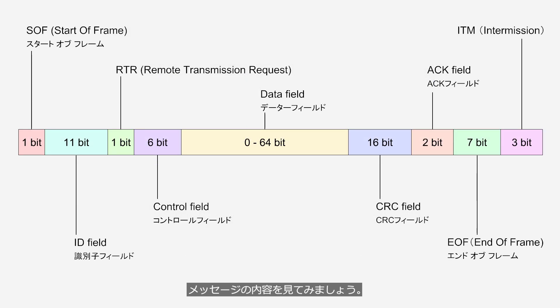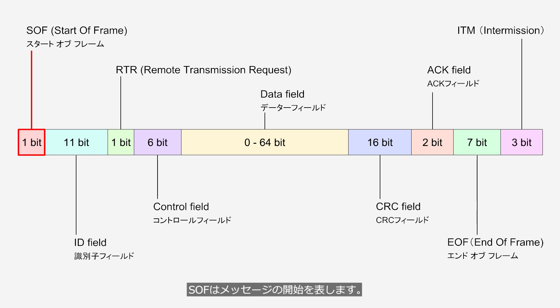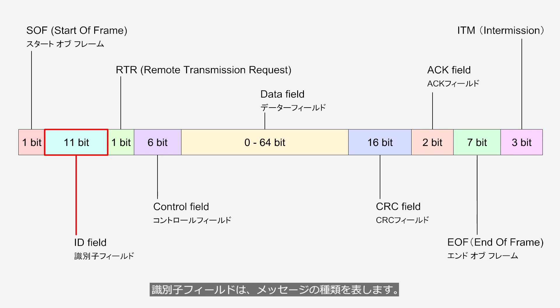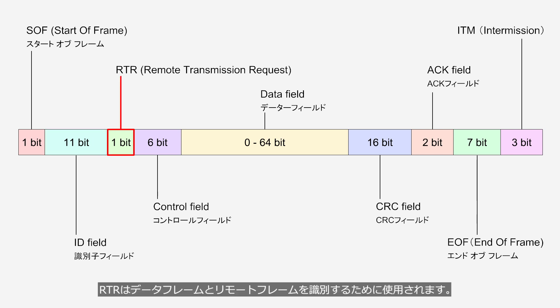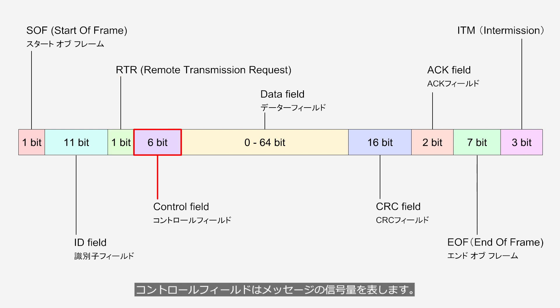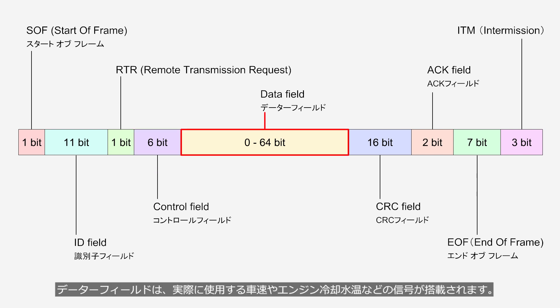Let's take a look at the content of the message. The message is divided into nine sections. The SOF indicates the start of the message. The ID field represents the type of message. The RTR is used to distinguish between data frames and remote frames. The control field represents the quantity of signals in the message. The data field contains signals such as vehicle speed and engine coolant temperature that are utilized for controlling the vehicle.